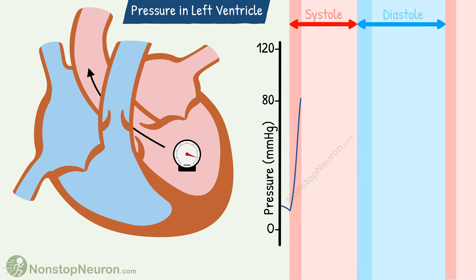During this, the pressure keeps rising and reaches a maximum level. The maximum pressure that the left ventricle achieves is about 120 mmHg. Then the ejection is slowed down, so pressure starts falling.